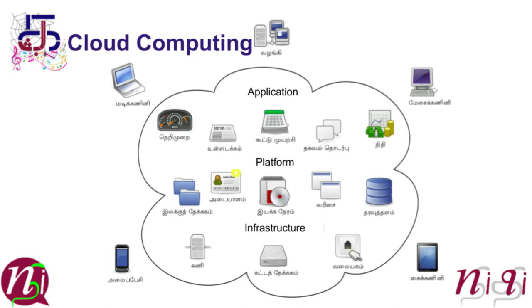In the infrastructure layer, the hardware things are going to be there: compute, memory, and network. These are the three major things available in the infrastructure layer. Compute always includes processor, RAM, and related running requirements.